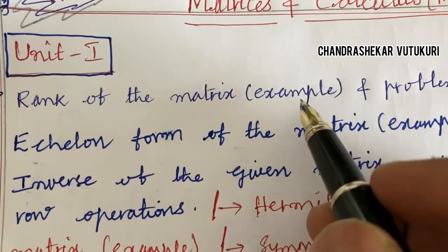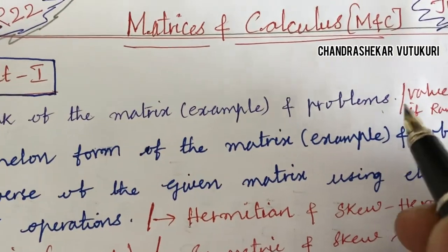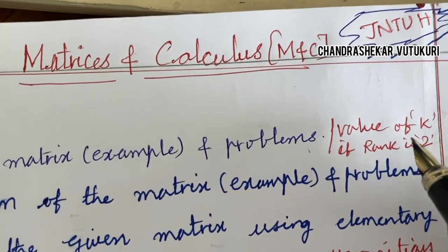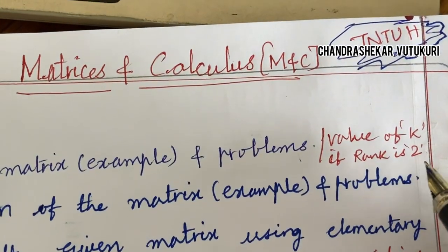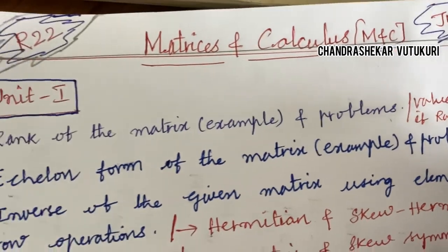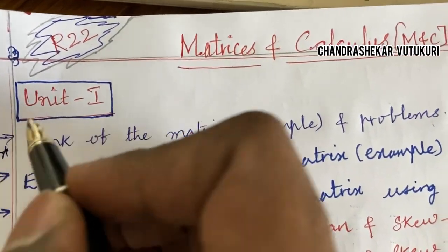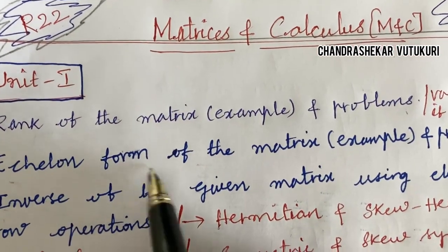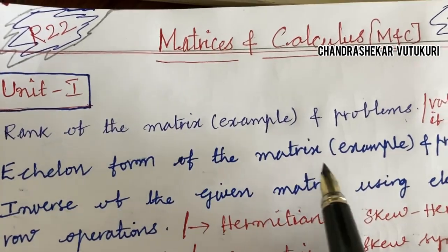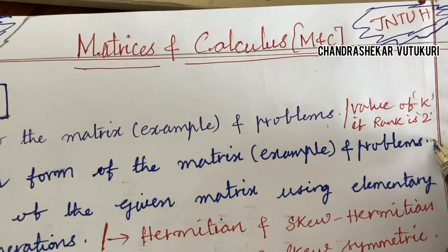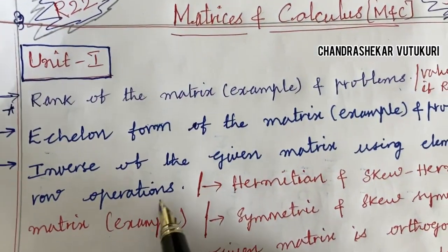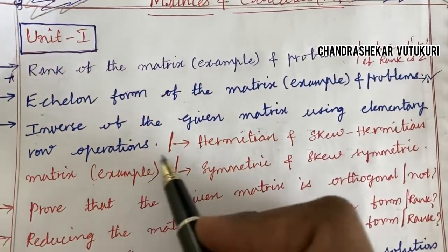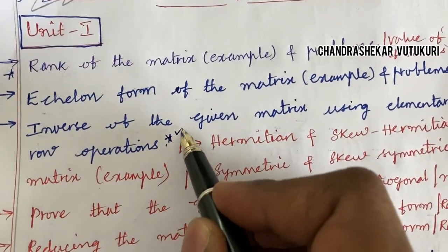Define the rank of a matrix along with an example, and problems related to the rank of the matrix — including finding the value of K if the rank is 2 or 3. Such questions are very likely in both short and long form. The echelon form of a matrix — definition and problems — is very important. Inverse of a given matrix using elementary row operations is also one of the important questions.